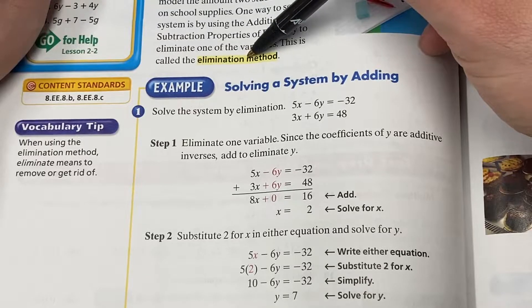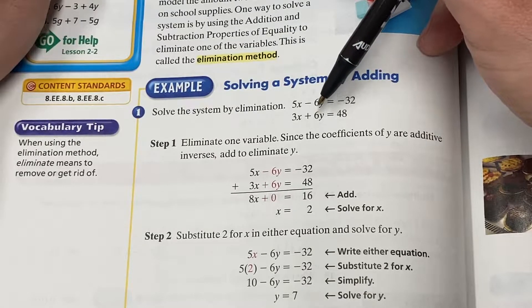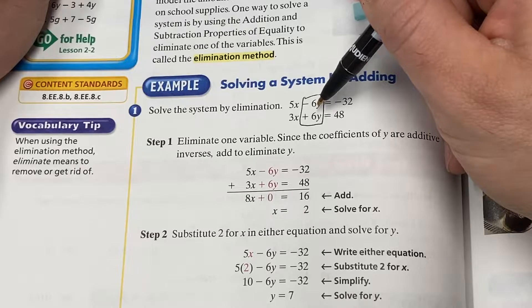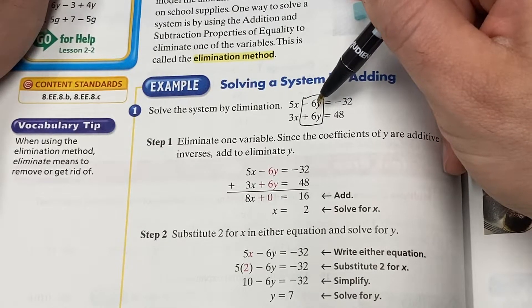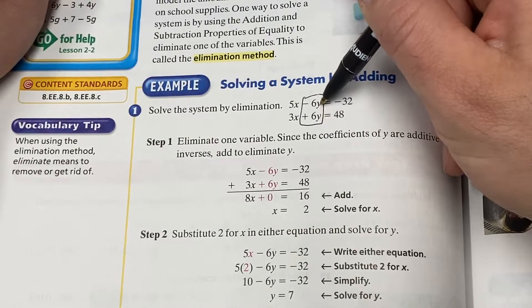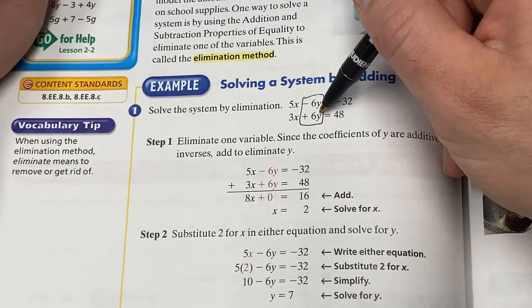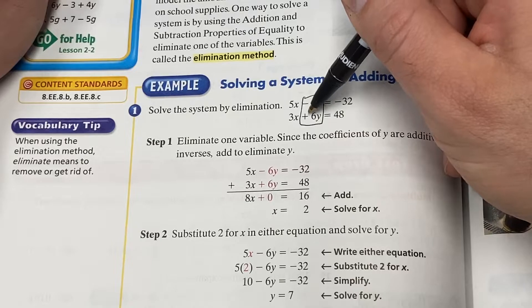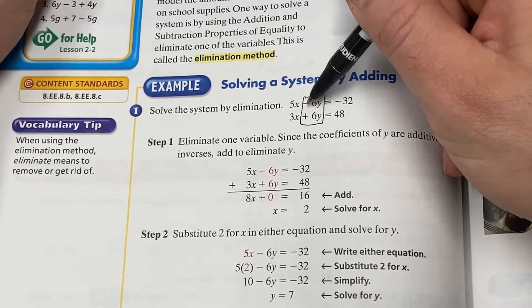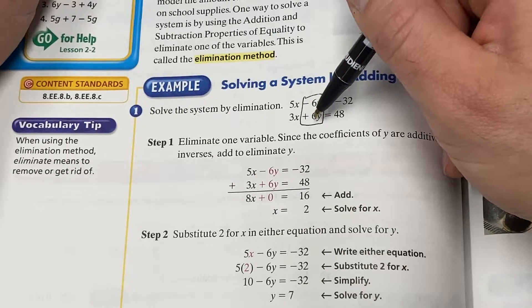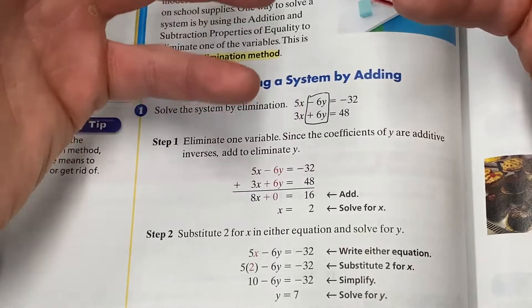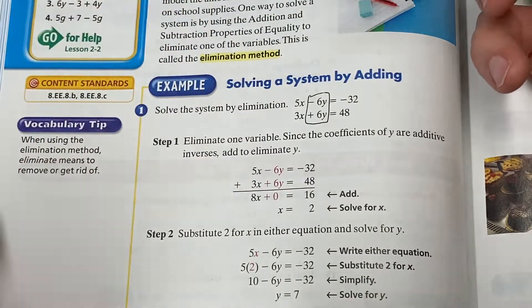We can solve this using the elimination method very easily. If you look at these Y's, they both have a six in front, don't they? One's negative, one's positive, but that doesn't matter. We can eliminate this Y variable by adding these two equations together. Why? Because when you add negative six to positive six, you get zero. When you add opposites, you get zero. And if you have zero Y's, you've eliminated the Y's.